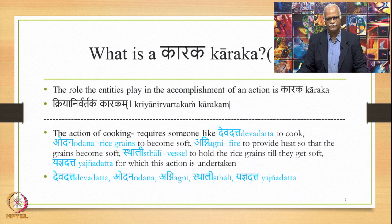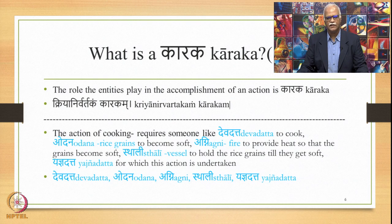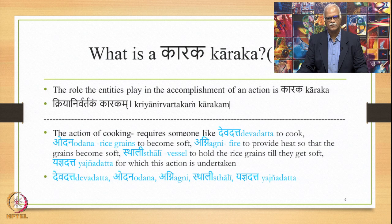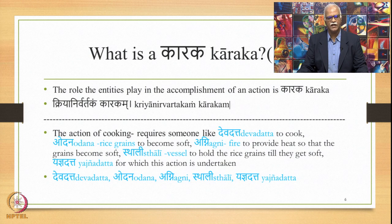Let us take an example — the action of cooking. This action of cooking requires someone like Devadatta to cook, Odana or rice grains to become soft, Agni or fire to provide heat so that the grains become soft, Sthali or a vessel to hold the rice grains till they get soft, and Yadnyadatta, for example, for which this action is undertaken. So we have Devadatta, Odana, Agni, Sthali and Yadnyadatta — different entities playing certain roles in bringing about and accomplishing the action of cooking. The roles that these entities play in the accomplishment of the action of cooking is what is bringing about that action. So they are Kriyanirvartakas, and so the roles that they play are called Karakas.